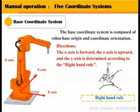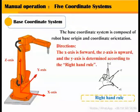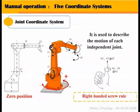The base coordinate system is composed of the robot base origin and coordinate orientation. The x-axis is forward, the z-axis is upward, and the y-axis is determined according to the right-hand rule.